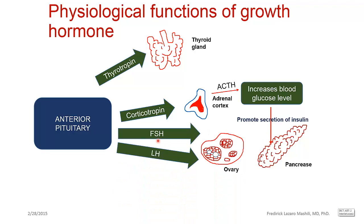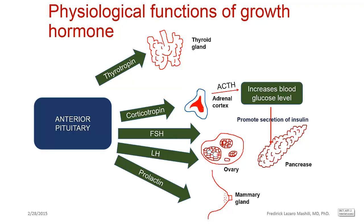We also have two other hormones: follicle stimulating hormone and luteinizing hormone. These two hormones have an effect in the ovaries, and we will discuss the details when we talk about the reproductive hormones. You also have prolactin, whose function is to stimulate production of milk in the mammary gland.